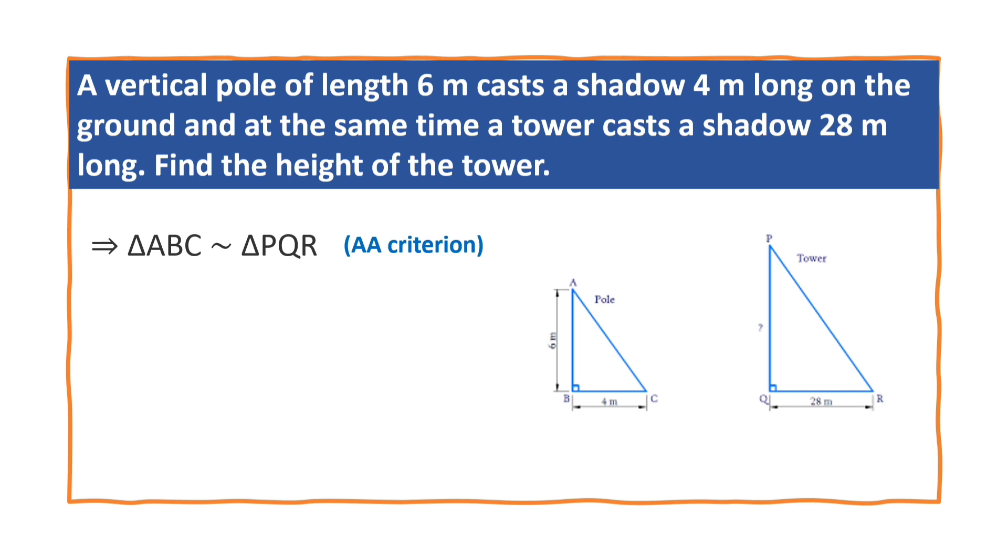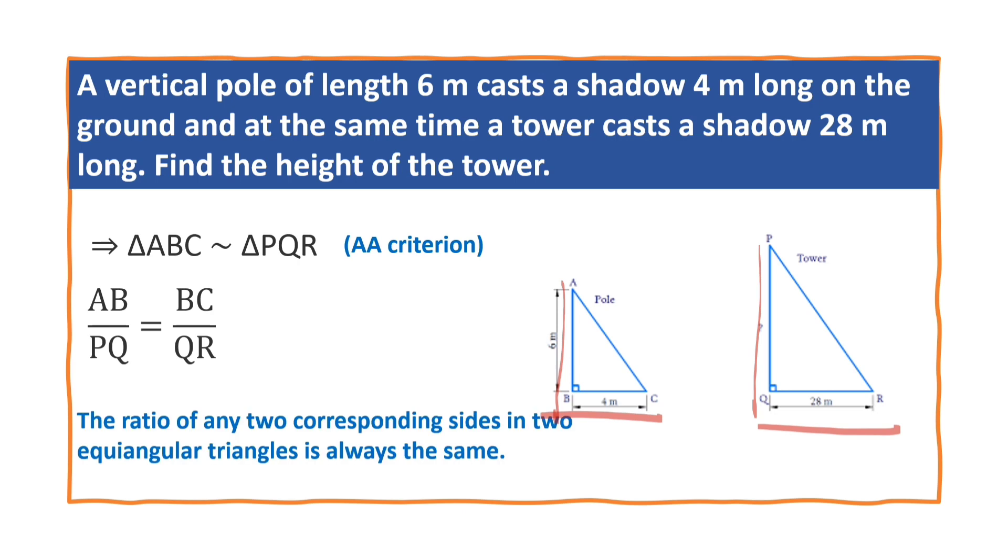So now we have AB by PQ is equal to BC by QR. Why? The ratio of any two corresponding sides in two equiangular triangles is always the same.